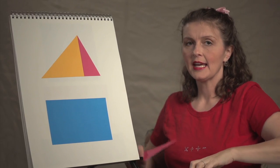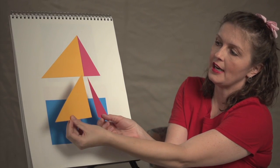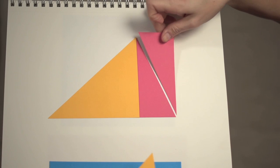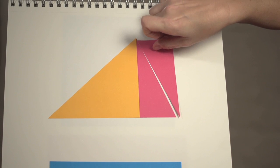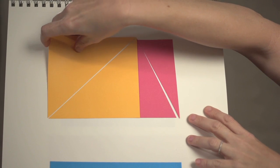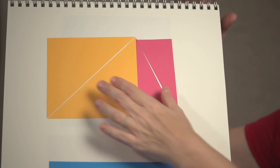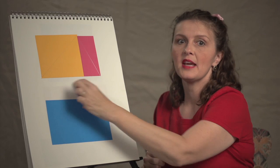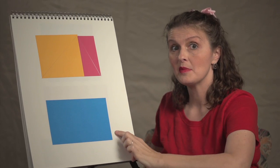If we take an exact copy of this triangle, of these two triangles, and we put them like so, you can see that this makes a rectangle that's the same as this rectangle.